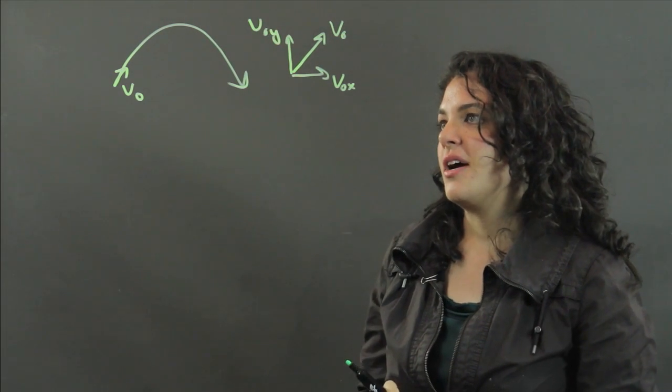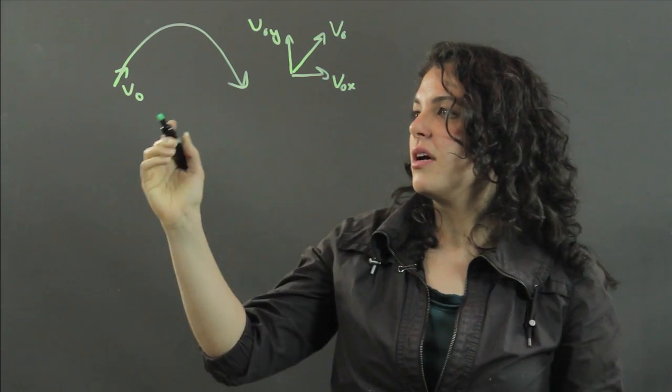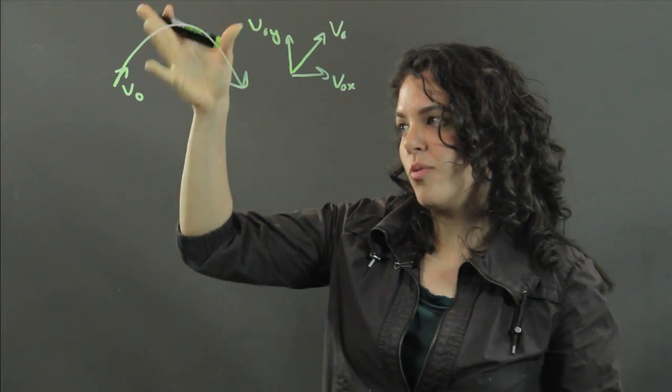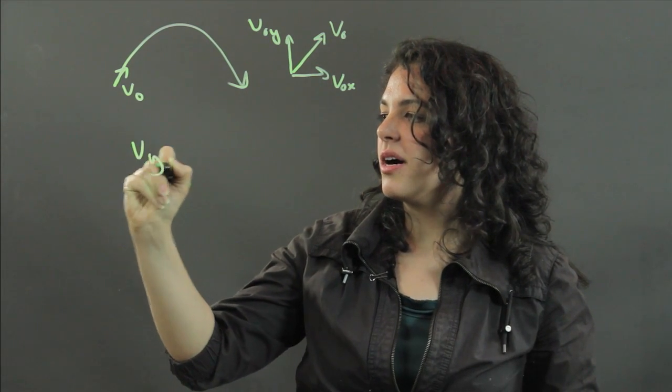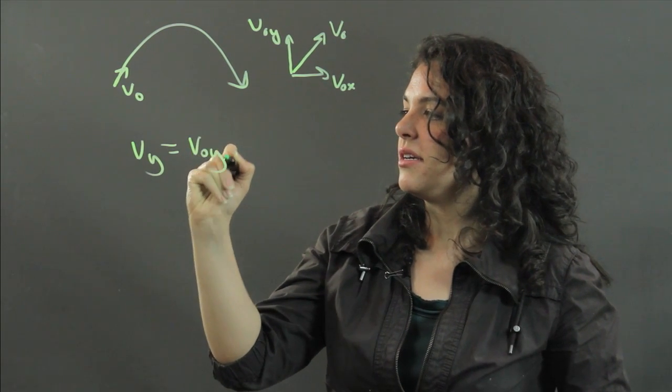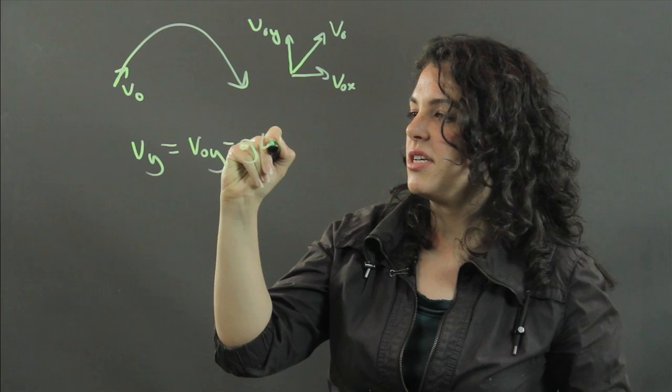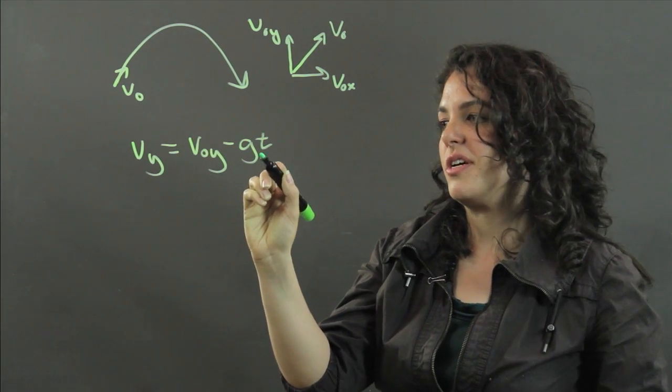If you want to find the velocity of the object at any point in the y direction, so the vertical velocity, vy can be found as v0y minus gt, where t is the time that's elapsed, and g is the gravitational acceleration.